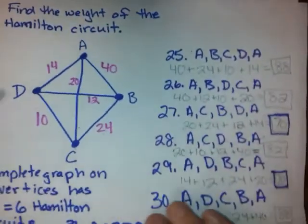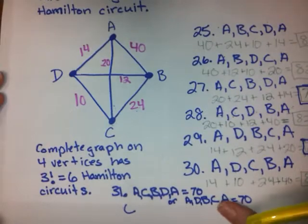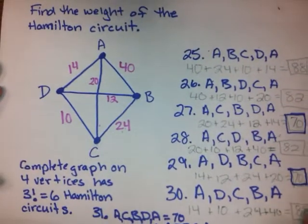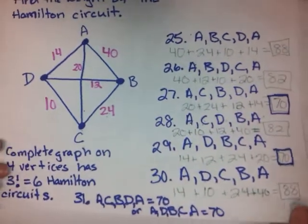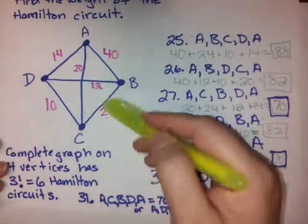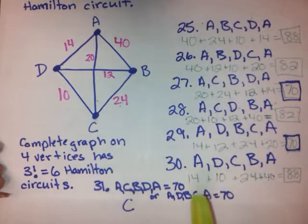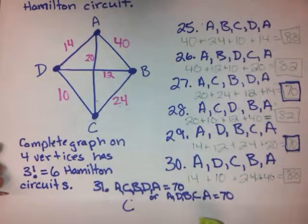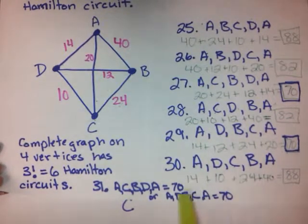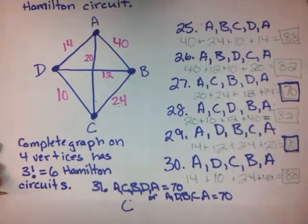We've already looked at numbers 25 through 31, where we found the weights of Hamilton circuits. They gave us a whole bunch of different circuits through a weighted graph. We found out what the weights were. We used the brute force method to determine which was the optimal solution.